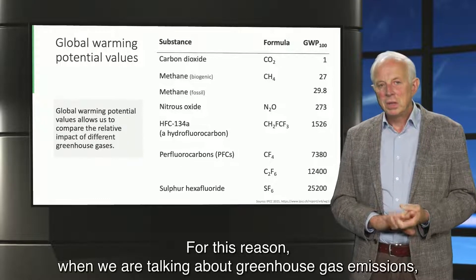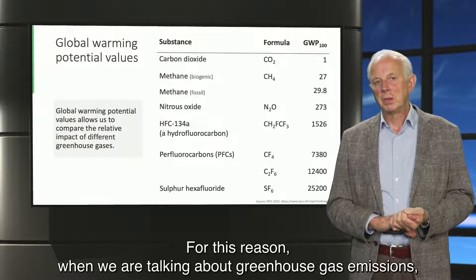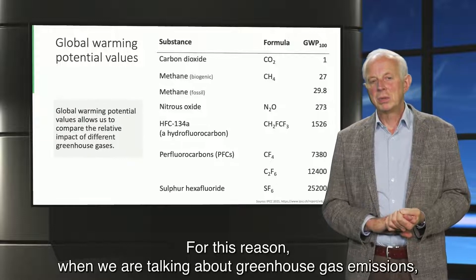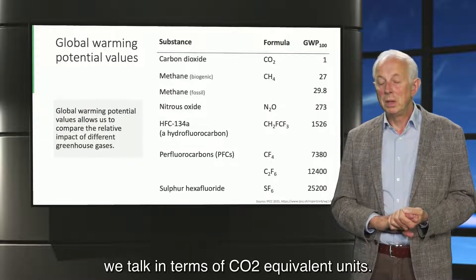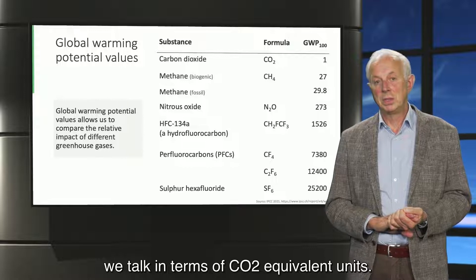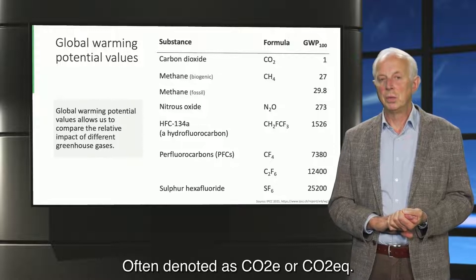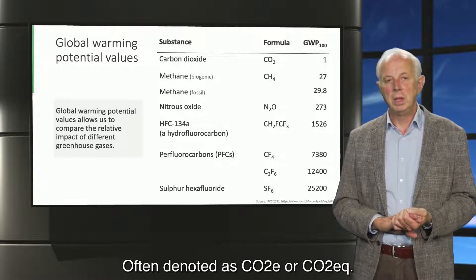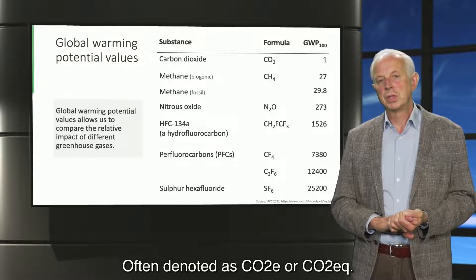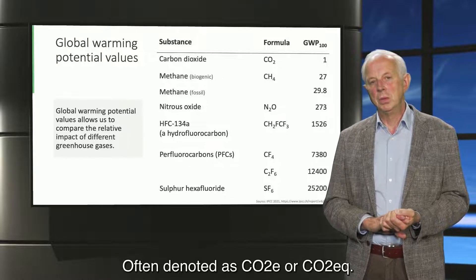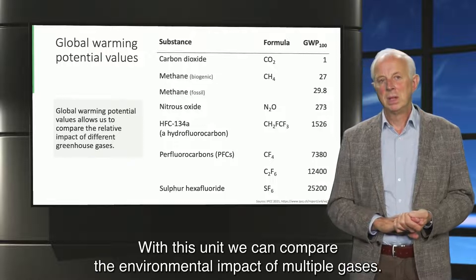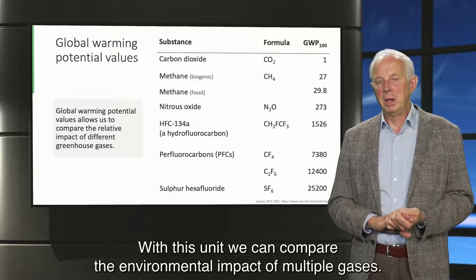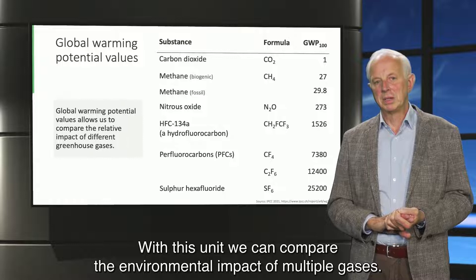This means that the emission of 1 tonne of methane will lead to a 27 times higher impact on temperature rise than the emission of 1 tonne of CO2. We say that the emission of 1 tonne of methane is equivalent to emitting 27 tons of CO2, at least when we look at the impact over 100 years. For this reason, when we are talking about greenhouse gas emissions, we talk in terms of CO2-equivalent units, often denoted as CO2e or CO2eq. With this unit, we can compare the environmental impact of multiple gases.